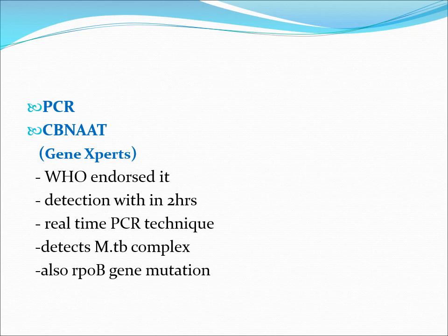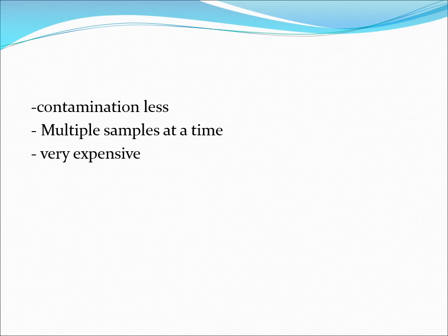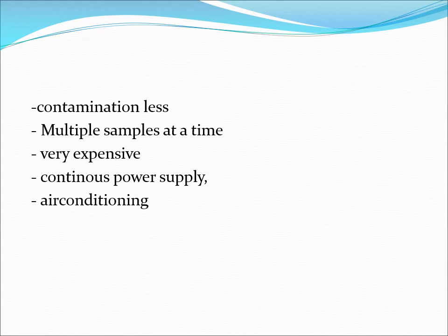CB-NAAT detects Mycobacterium tuberculosis complex but cannot speciate further — it only identifies whether it is MTB complex. It also detects rifampicin mutation via the rpoB gene. Contamination risk is low as everything occurs within one system and multiple samples can be processed simultaneously. However, the major disadvantage is that it is very expensive and requires continuous power supply and air conditioning, limiting field use at PHC level.